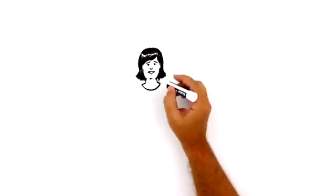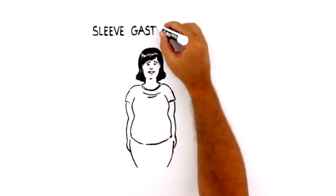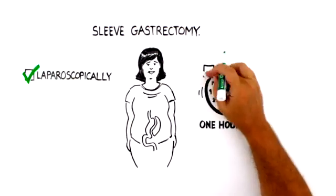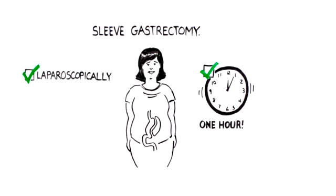After talking with her surgeon, Sarah chooses to have a sleeve gastrectomy. The surgery is done laparoscopically with a few small incisions, takes about an hour to complete, and she spends one night in the hospital before starting her new life.